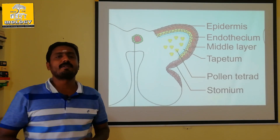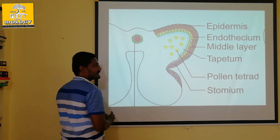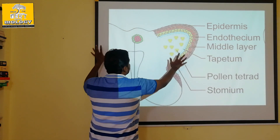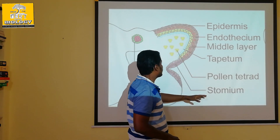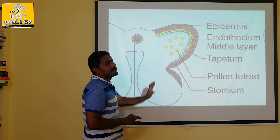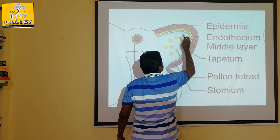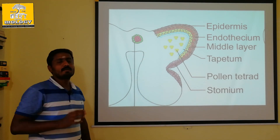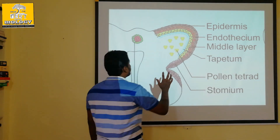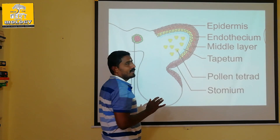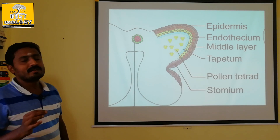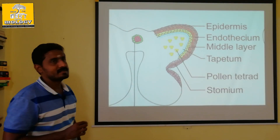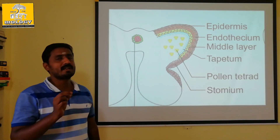This gives a butterfly shape structure. This is the anther part. The anther consists of pollen grains, which are in the anther cavity. There is also a region called the connective.